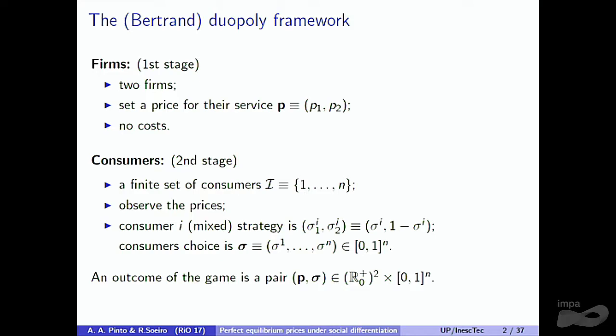We look at the usual Bertrand duopoly framework, but in a quite different way from the usual one. We have a two-stage game. In the first stage, we have two firms that have to decide which price they should practice. The examples we have in mind are hotels, resorts, computers — places where the people who go there to buy, or who use a certain kind of computer, matter for the choices others make. If all my friends use a Macintosh, then I want to buy a Macintosh. So who is making decisions with us is important.